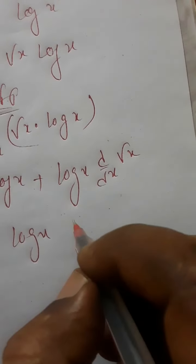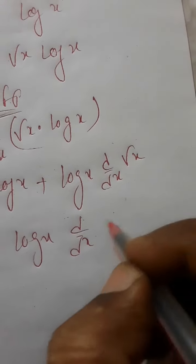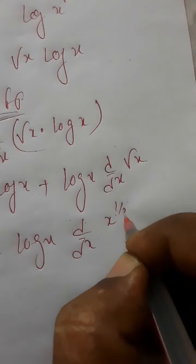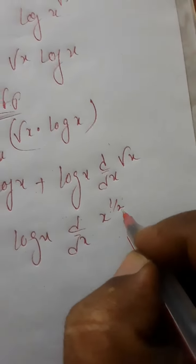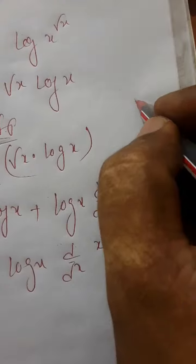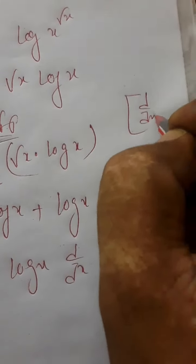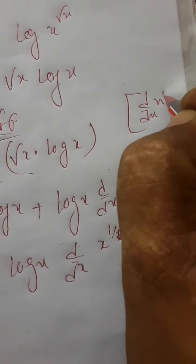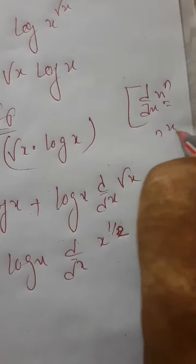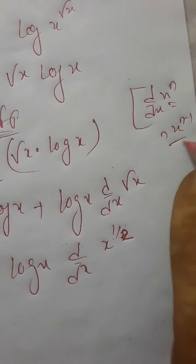Root x means x to the power of half. We already know the differentiation formula: d by dx of x to the power of n is n into x to the power of n minus 1. So d by dx of x to the power of half uses this formula.